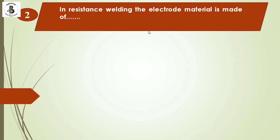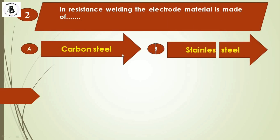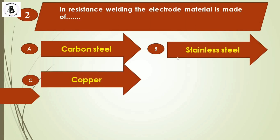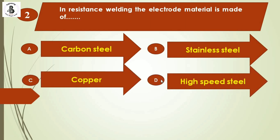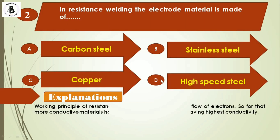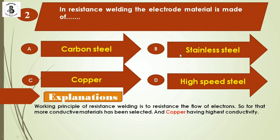Question 2: In resistance welding, the electrode material is made of — option A: carbon steel, option B: stainless steel, option C: copper, option D: high-speed steel. In resistance welding, the working principle relies on resistance to electron flow, so more conductive materials are selected. Among all four options, copper has the highest conductivity, so the right answer is option C: copper.